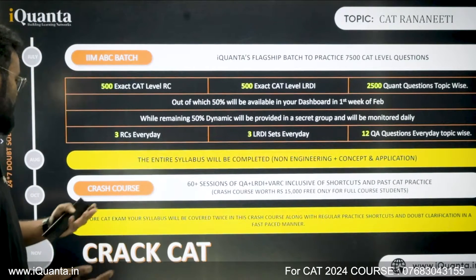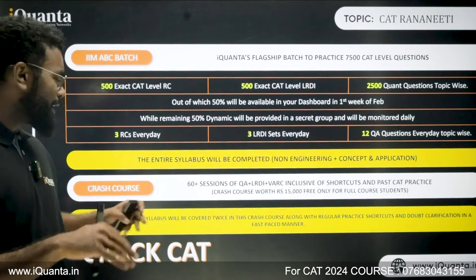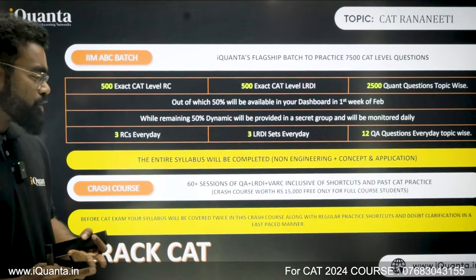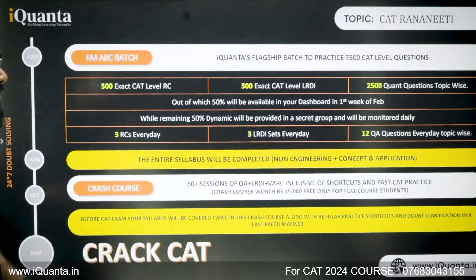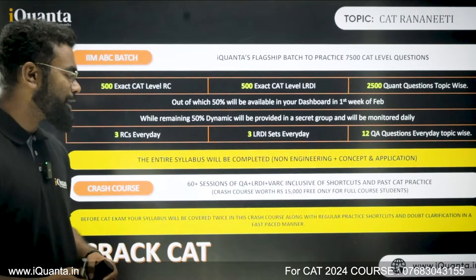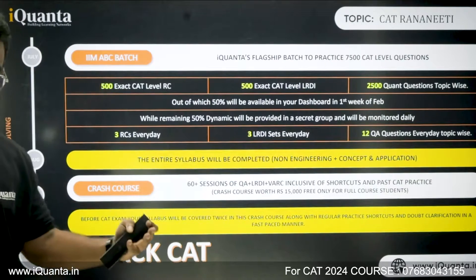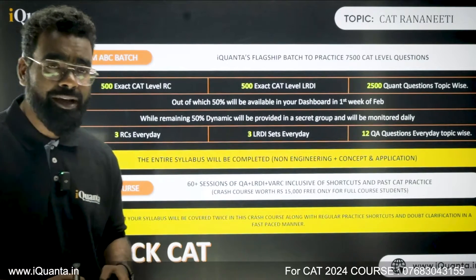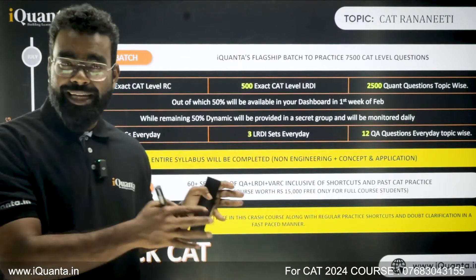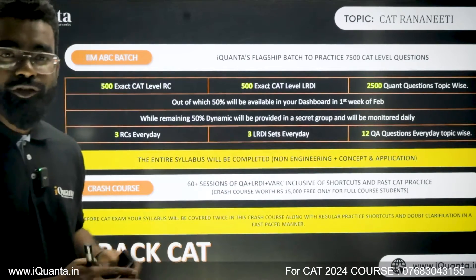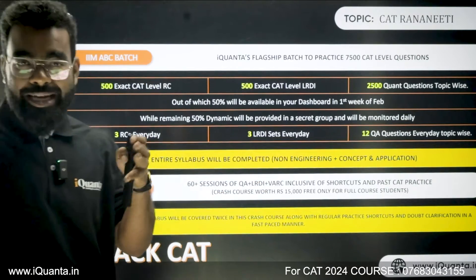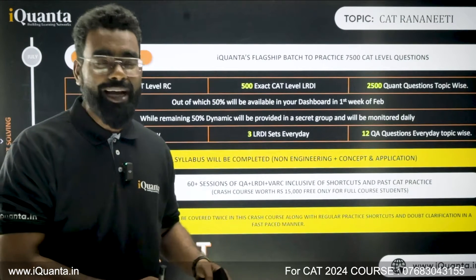The entire syllabus will be completed by August, and mocks begin from mid-July. The crash course starts in late August or September and covers full revision of the entire syllabus. It normally costs around ₹15,000, but if you're enrolled in this batch, it is included absolutely free — you don't need to pay anything extra.